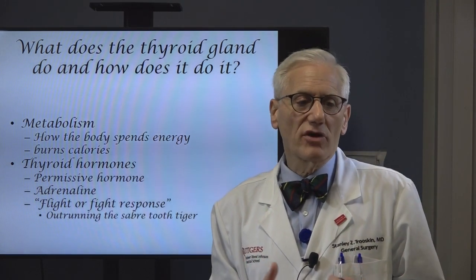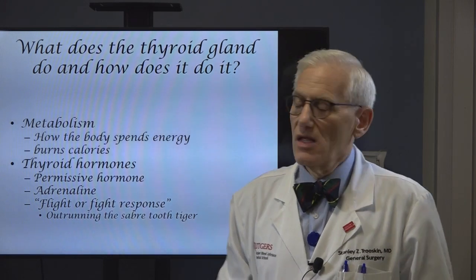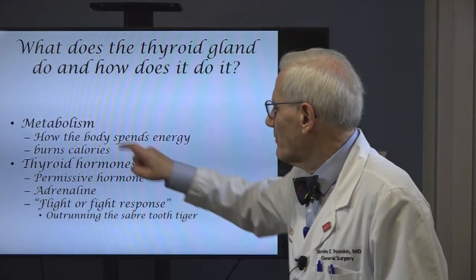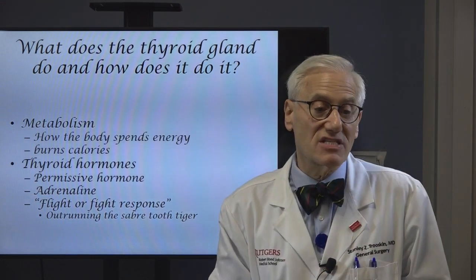What does the thyroid gland do and how does it do it? The thyroid gland is responsible for metabolism — how the body burns calories. If you take in 1500 calories a day and you burn 1500 calories a day, your weight's going to stay stable. If you take in 1200 calories and burn 2000, over time you'll lose weight. And if you take in 2500 and you burn 1500, over time you're going to gain weight.